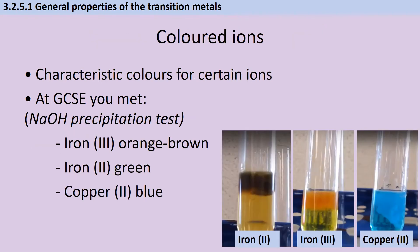If you studied GCSE chemistry triple science, you're already familiar with the idea that different transition metal ions have certain characteristic colors. You can use the sodium hydroxide precipitation test to identify those. If you add sodium hydroxide and you see a sort of orangey-brown rusty precipitate, that indicates the presence of Iron(III) ions. Whereas if you get a dark green precipitate, that's Iron(II) ions. And if you get a blue precipitate, that's Copper(II) ions.